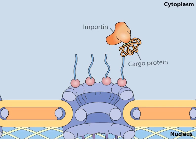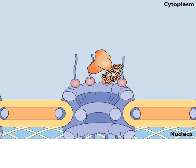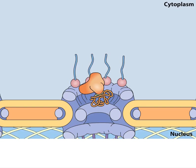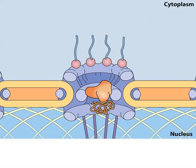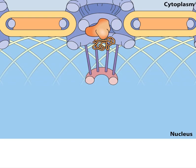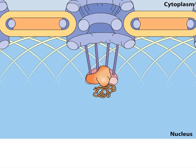With its cargo attached, importin binds to specific nuclear pore proteins in the cytoplasmic filaments. By sequential binding to more interior nuclear pore proteins, the complex is translocated through the nuclear pore.